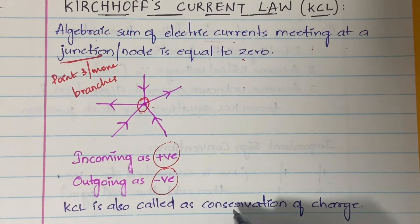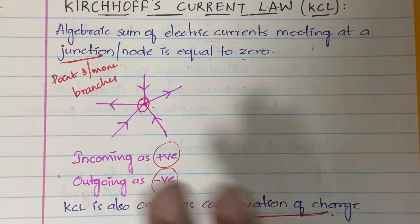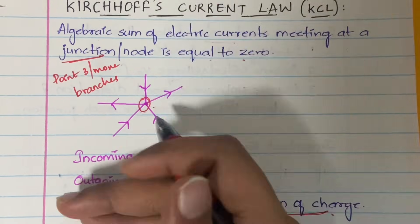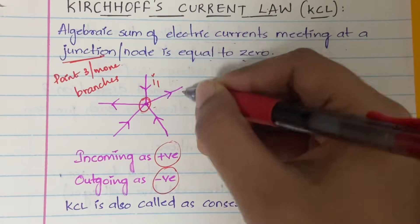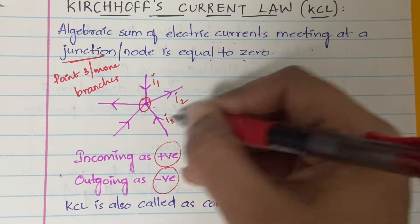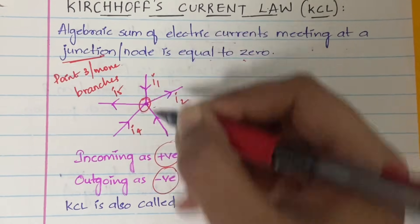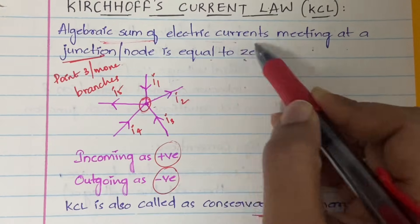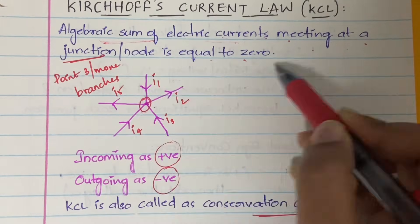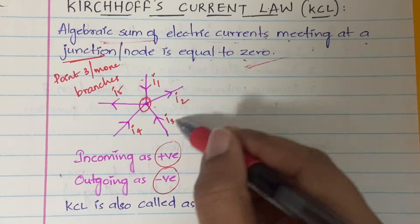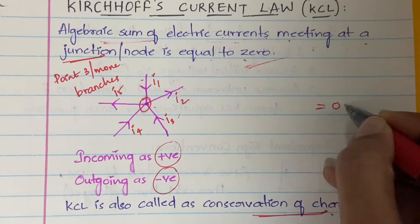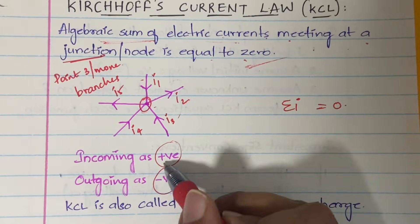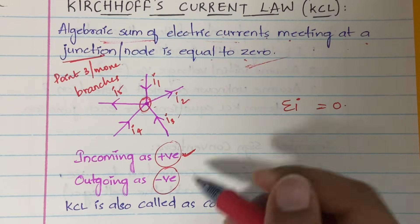KCL can also be called the conservation of charge. For example, here we have five currents: i1, i2, i3, i4, and i5 meeting at a junction. Kirchhoff's Current Law says the algebraic sum of all the electric currents meeting at a junction is equal to zero, so the sum of all these currents should be equal to zero. Incoming currents are considered positive and outgoing currents are considered negative.